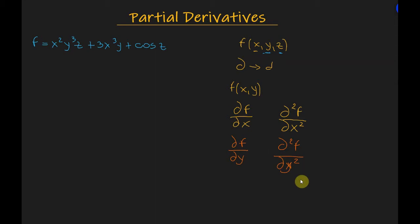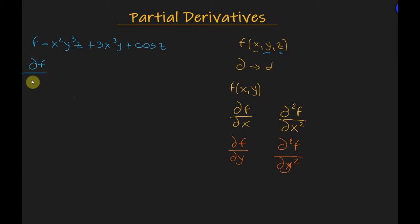Today we'll work on this example and do only the first-order partial derivative. Please watch my other video where I explain how to do second-order and mixed derivatives. Now let's get started. We have this function and let's find the partial derivative of the function with respect to z.